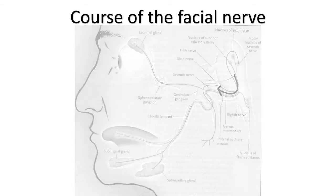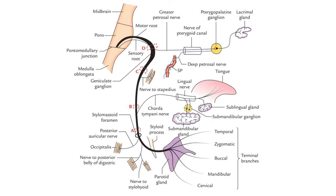Now let's look at the branches of the nerve. The first branch, the greater petrosal nerve, travels to the lacrimal gland. The second branch runs to the stapedius muscle. The third branch, the corda tympani nerve, travels to the tongue. The nerve exits the facial canal at the stylomastoid foramina, where it passes through the parotid gland and spreads out to innervate 23 facial muscles. It is important to note that the facial nerve does not innervate the masseter and lateral and medial pterygoid muscles, as they are innervated by the trigeminal nerve, i.e. the fifth cranial nerve.